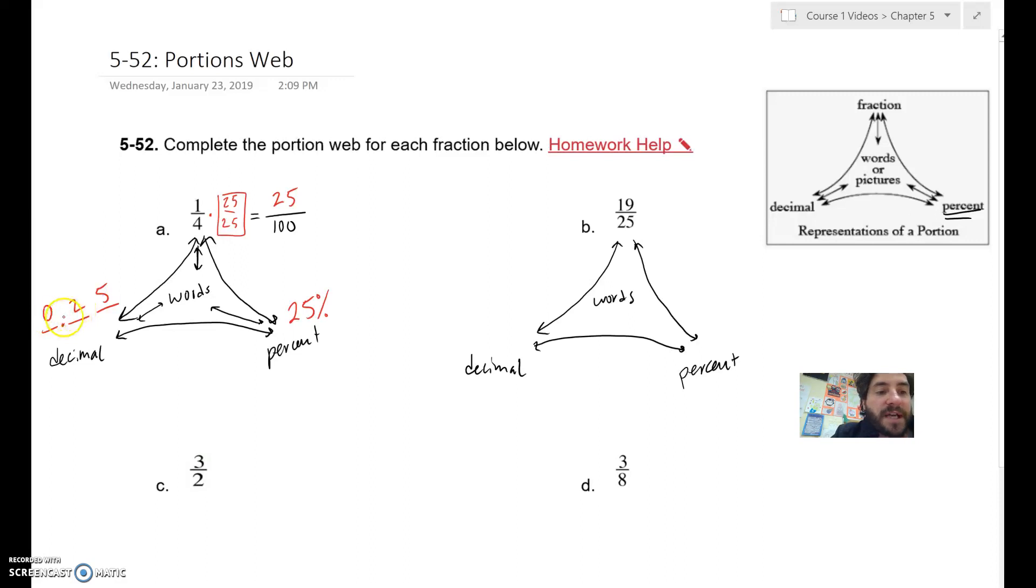Twenty-five hundredths would be written like that. You can also move the decimal place twice to turn a percent into a, turn a decimal into a percent. So you can move it two places to the right. Here you can pretend the decimal point is right there and move it two places to the left to turn it into a decimal.